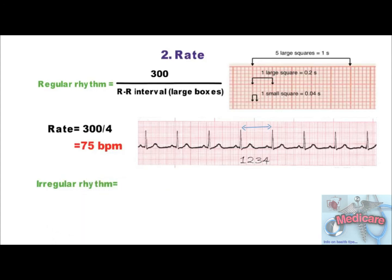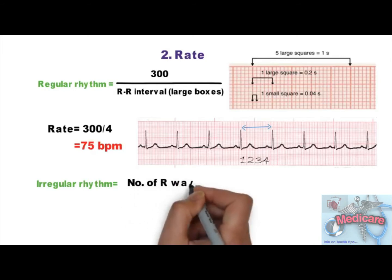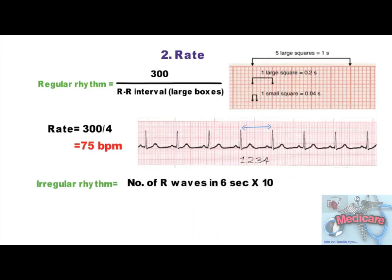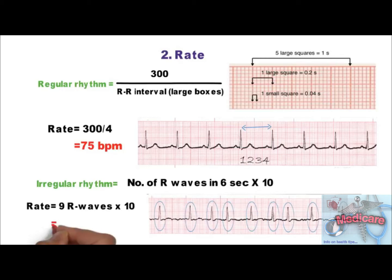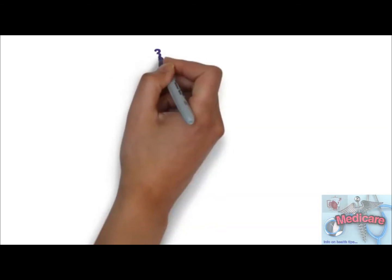If the rhythm is irregular, as in atrial fibrillation, rate is calculated by the number of R waves in 6 seconds multiplied by 10, to get the rate per minute. In this ECG strip, there are 9 R waves or 9 QRS complexes, so the rate comes out to be 90 beats per minute. The 300 divided by RR interval formula is valid only if the rhythm is regular — that is why we should first check the rhythm and then calculate the rate accordingly.